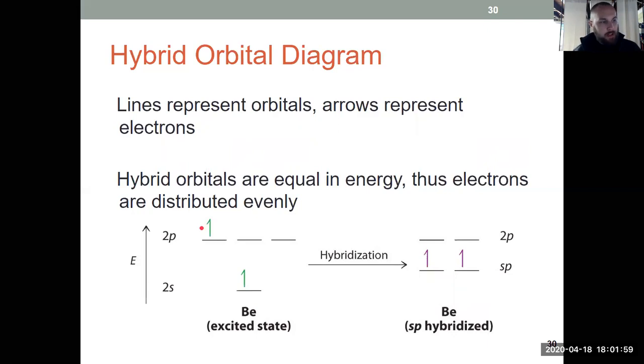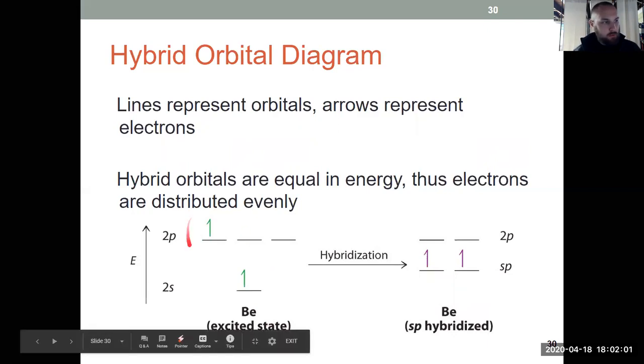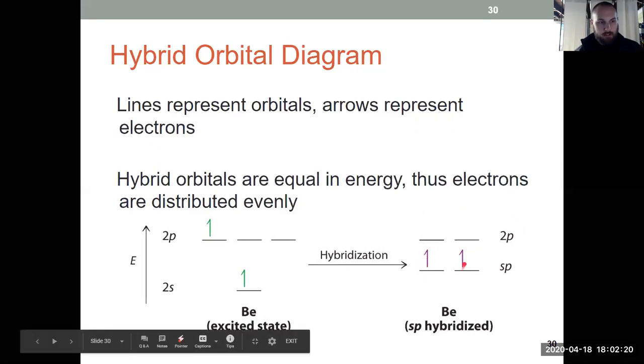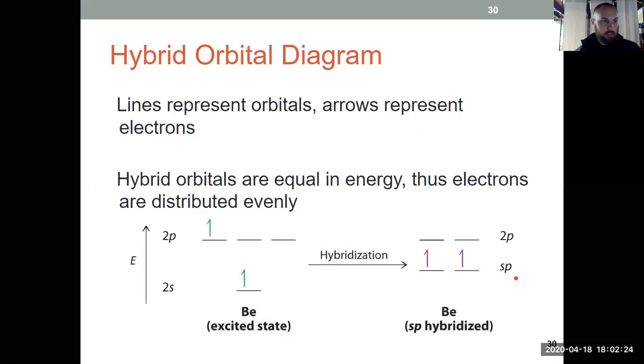And then when I undergo the hybridization process, these two orbitals get hybridized. And remember, hybridized orbitals are the same energy. So I get two new sp-hybrid orbitals, and then I've got two 2p orbitals that are left over. And then I fill these corresponding to the Aufbau principle and Hund's rule. I put one electron in each box, those two that are left, and beryllium forms two bonds in BeCl2.